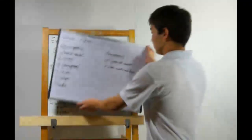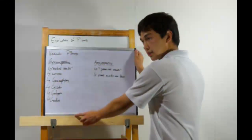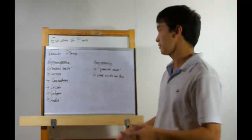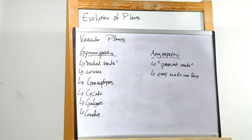Alright, our next big innovation is seeds. These allow us to stop depending on water for reproduction. And we have the seeded vascular plants. These include the gymnosperms and the angiosperms. Gymnosperm means naked seed. We're going to explain this a bit more in depth when we get to angiosperms. You'll see why.